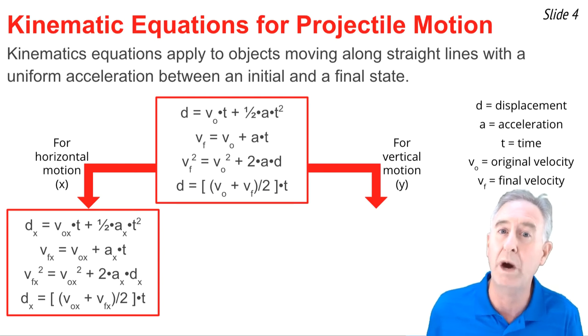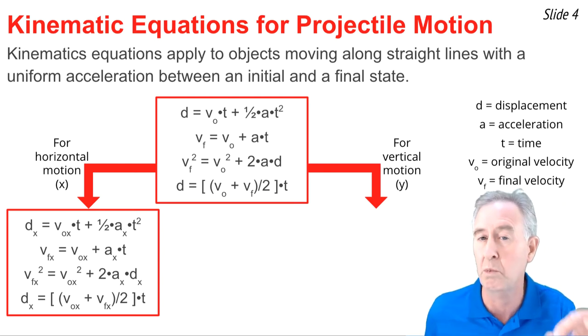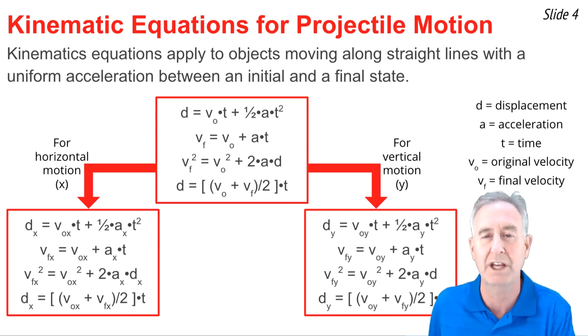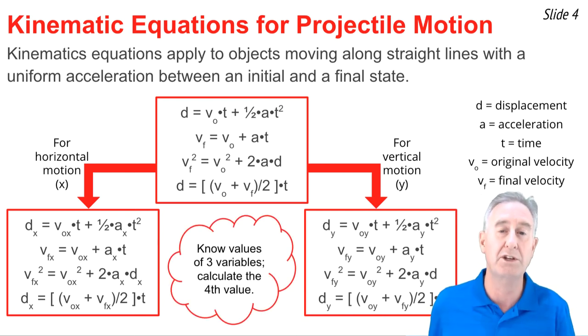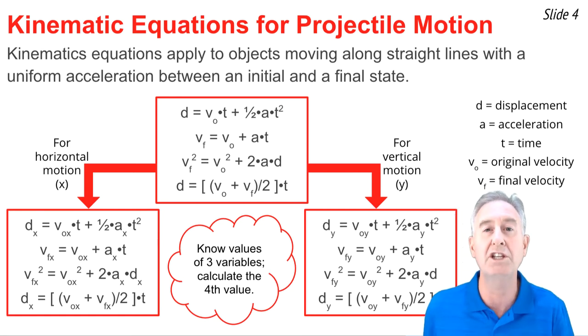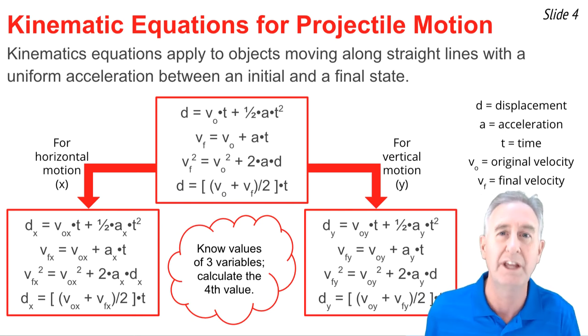We can do the same thing for the y motion by placing a subscript y after every vector quantity, and we end up with these equations. Now what you'll notice in every equation is there are four quantities. So the idea of their use is that you need to look for three known values for the three variables in order to solve for the fourth variable in that equation.